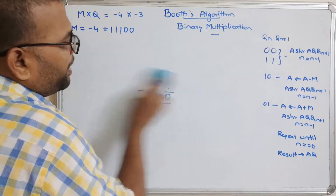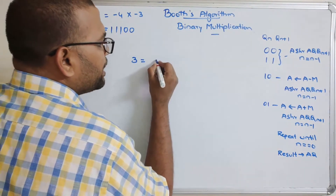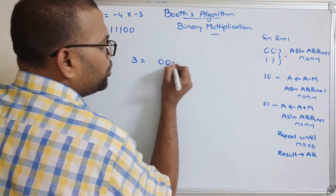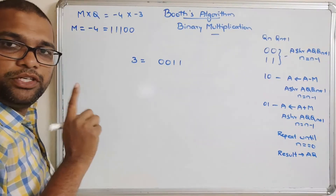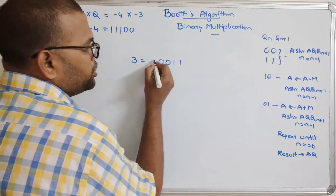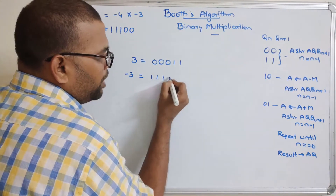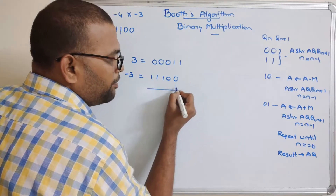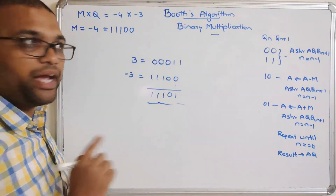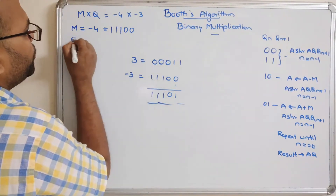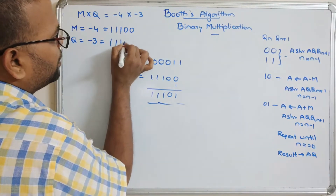Now, the binary representation for minus three: three in four bits is 0011. Since it's a signed number, we add a sign bit, giving 00011 for positive three. For minus three, the one's complement is 11100, and adding one gives 11101. So the binary representation of minus three is 11101. Q equals minus three: 11101.